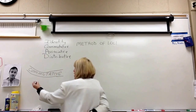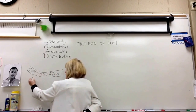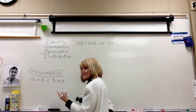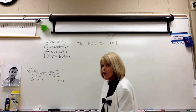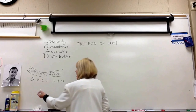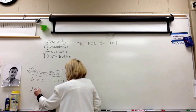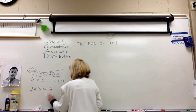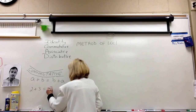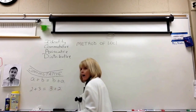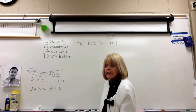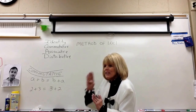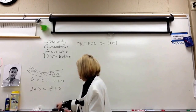Now the commutative property — I'm going to write it right underneath that. That's A plus B equals B plus A. All that means is two plus three is the same thing as three plus two. You get five both ways. That's not hard. What's hard is remembering what name goes with which thing.